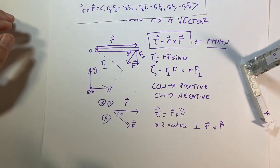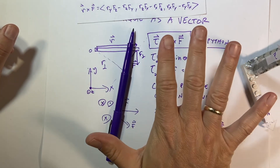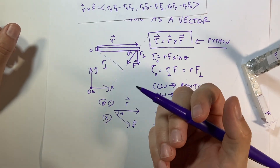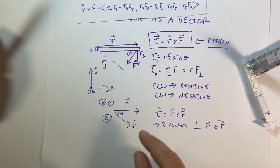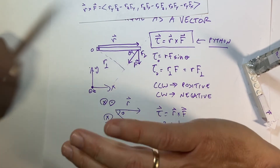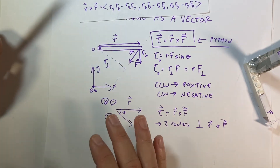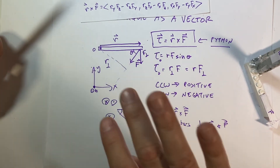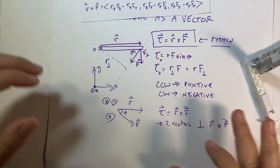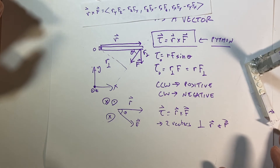The first rule of the right-hand rule: put down your pencil. The second rule: don't hurt yourself — be careful not to twist your wrist into a weird position. It's really just a joke, but that's the right-hand rule.